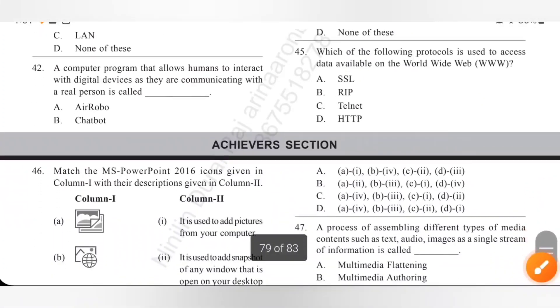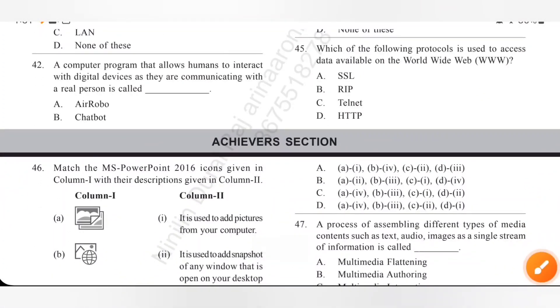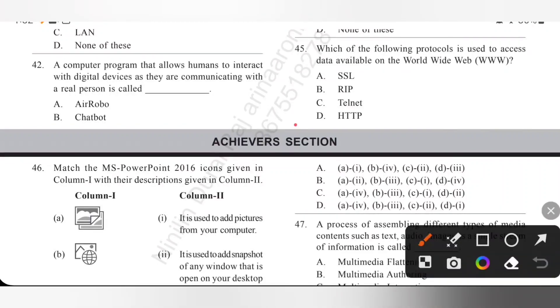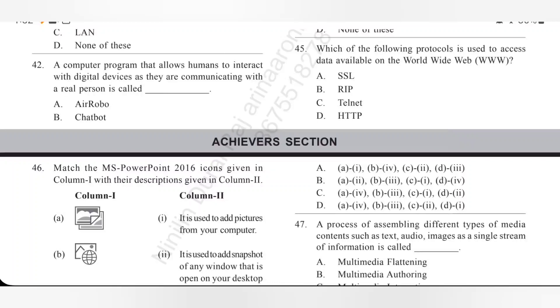Question 45: Which of the following protocol is used to access data available on the World Wide Web? So, it is HTTP. Option D is the correct answer. HTTP means Hypertext Transfer Protocol. So, option D.